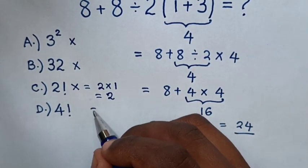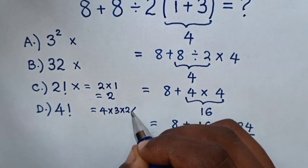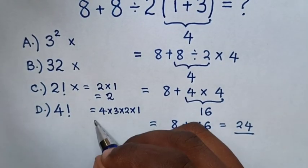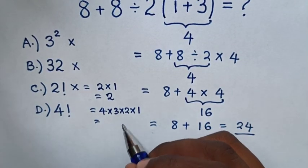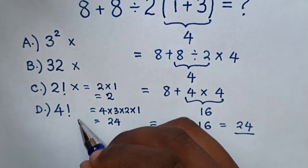D, 4 factorial, which is same as 4 times 3 times 2 times 1, which is equal to, 4 times 3 is 12. 12 times 2 is 24. So, 24 is the correct answer.